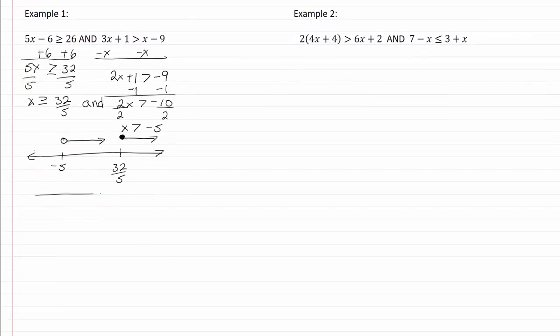So on our actual graph, we want only where it's overlapping. That's going to be at our thirty-two-fifths and we're going to use the open dot, going from thirty-two-fifths to infinity. So for our interval notation, that's going to look like thirty-two-fifths to infinity.